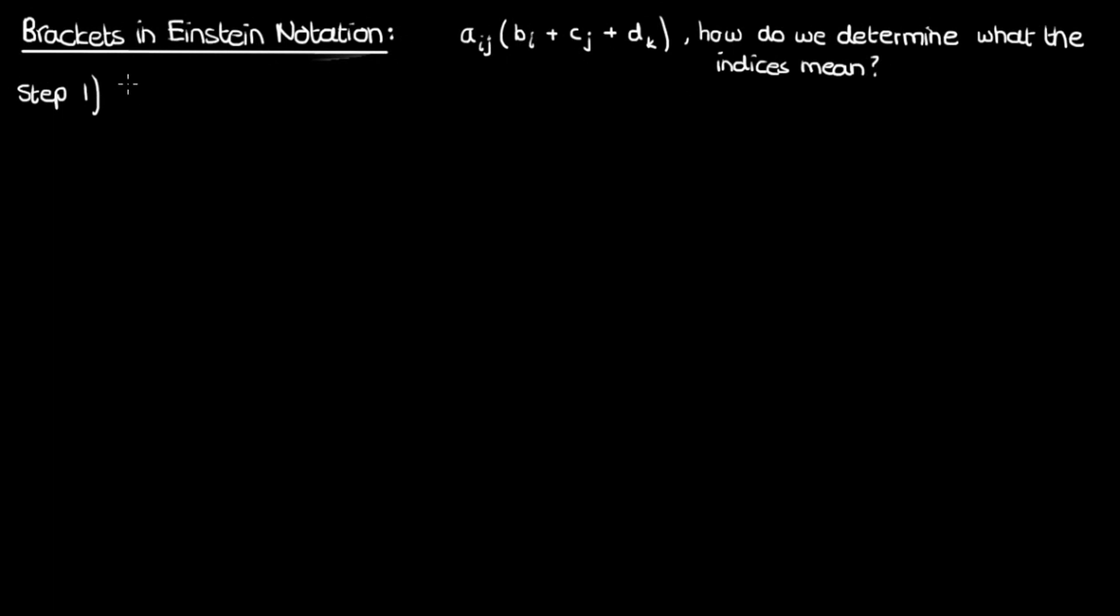Well, here's what you do. In the first step, you look at the term outside the parentheses, the aij, and combine it separately with each of the terms inside the parentheses.